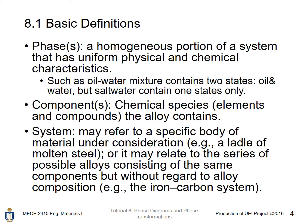Components are the chemical species, elements, and compounds that a particular alloy contains. System could refer to a specific body of material under consideration, such as a ladle of molten steel, or it may relate to the series of possible alloys consisting of the same components without regard to alloy composition — for example, the iron-carbon system.